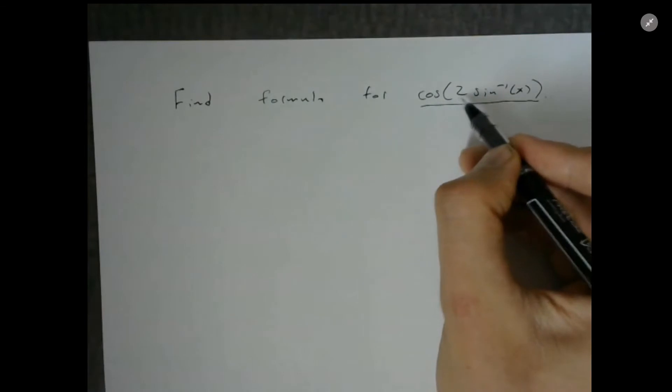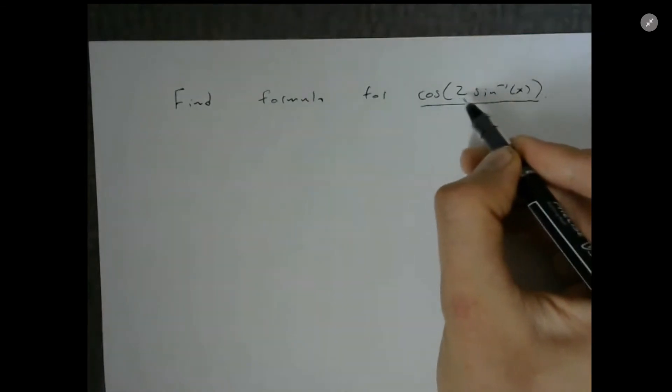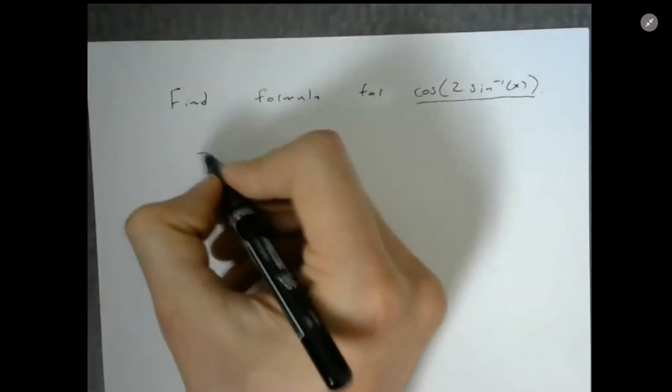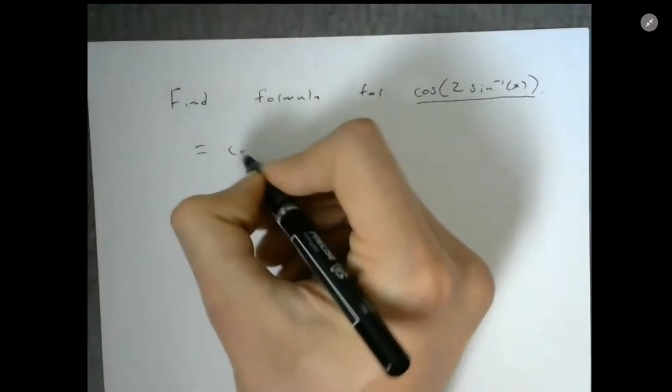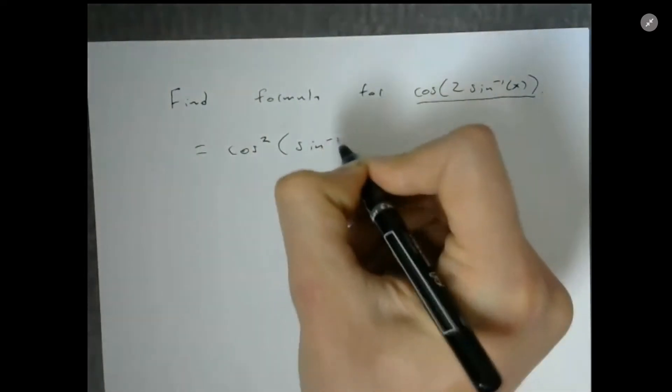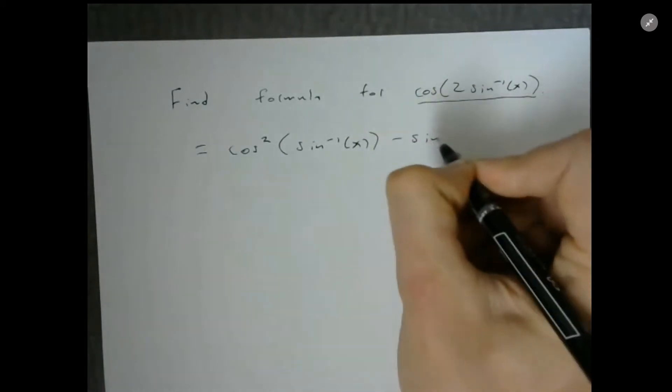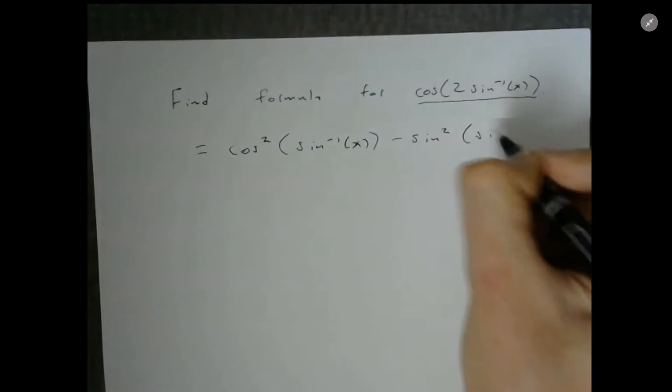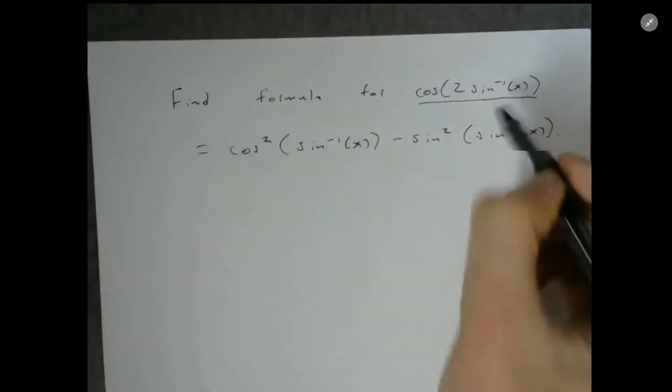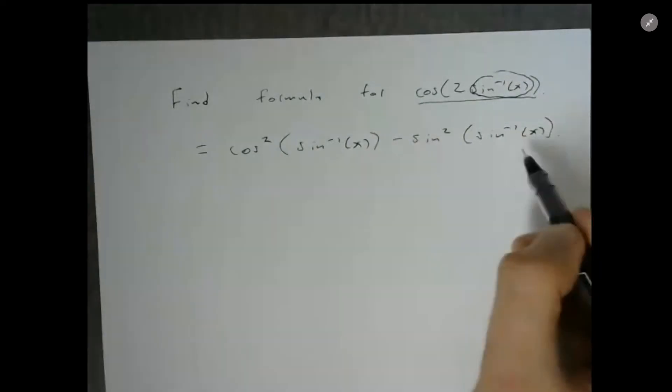Well, the first thing I want to do is use an identity to take care of that two in front. This is going to equal cosine squared of sine inverse of x minus sine squared of sine inverse of x. What I've done here is I've just looked at this angle sine inverse x and used this identity to get rid of the two.